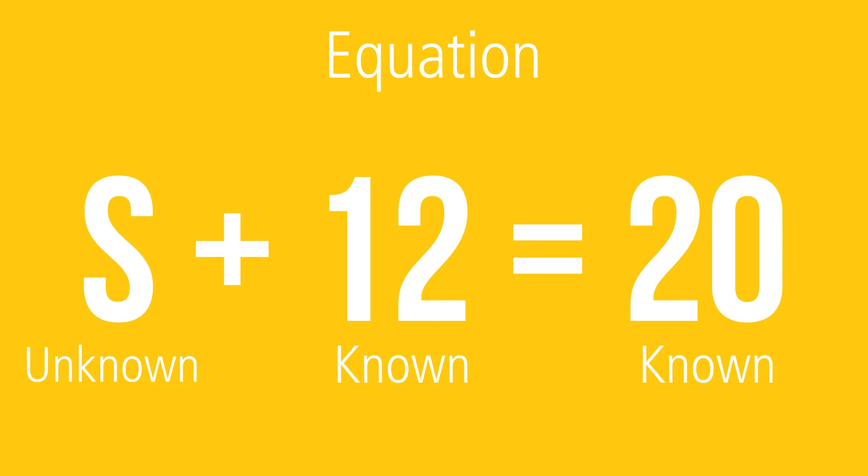Variables, unknowns, and constants, knowns, are also known as the terms of the equation. The plus sign and the equal sign separate the terms and describe the relationship between them.